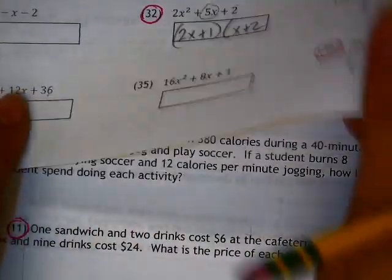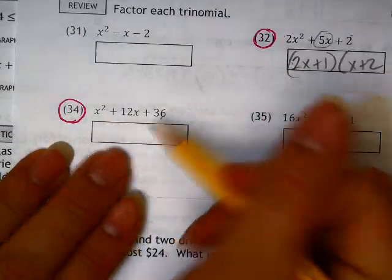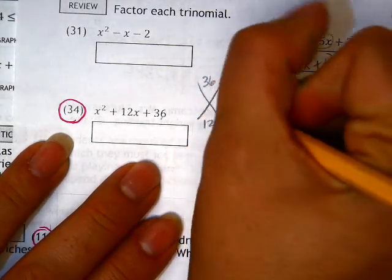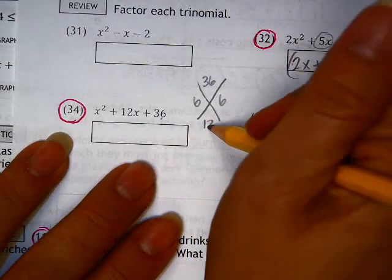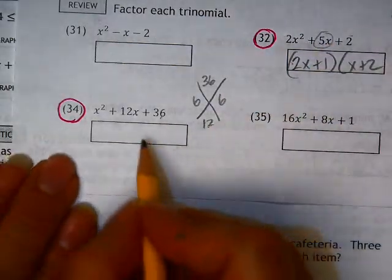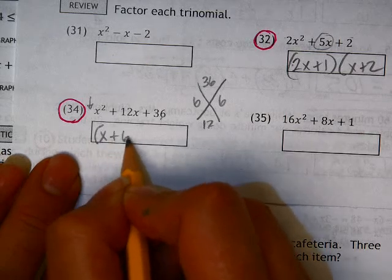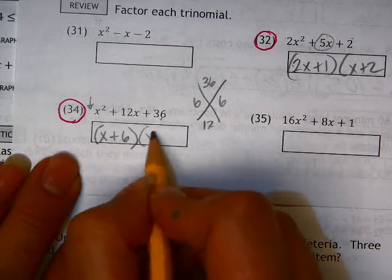Now, for this guy here, pretty simple. We use our diamond problem, 36 and 12. We're just finding the two numbers that multiply to get 36 and add to get 12. But I don't have to do anything else because there is only a 1 in front of there. So I simply use those two numbers, and I'm done.